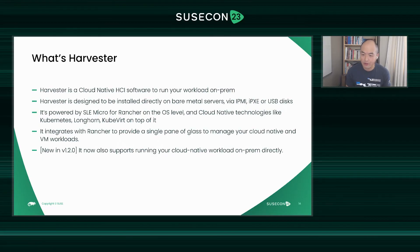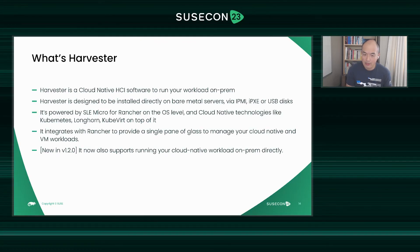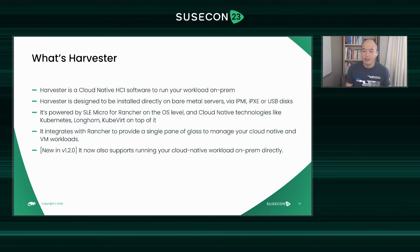Underneath, Harvester is powered by SUSE Linux for Rancher and cloud-native technologies like Kubernetes, Longhorn, KubeVirt, KubeVIP, and RKE2. All the technology Harvester uses is open source — it's all vendor-neutral and non-locking. What really makes Harvester shine is we also integrate with Rancher to provide a single pane of glass to manage your cloud-native container workload and VM workload. They're treated equally well.